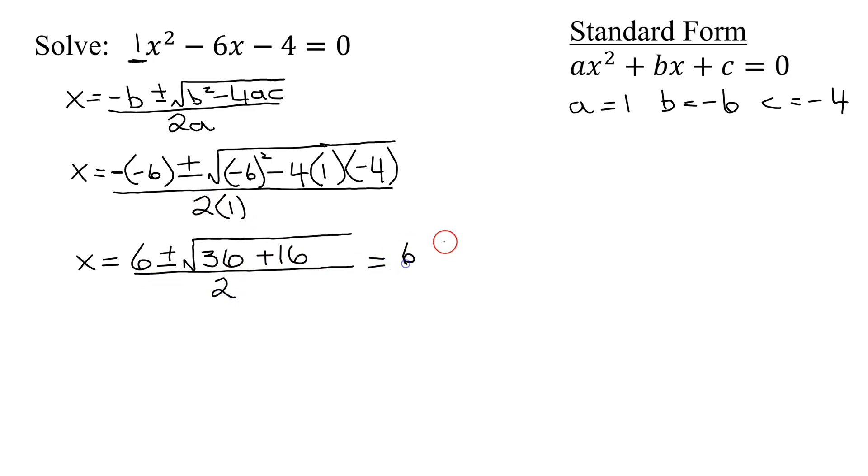So I'm going to get 6 plus or minus the square root of 36 plus 16 is 52. All divided by 2. So we need to simplify the square root of 52. So let's factor 52. Let's see. It's even. So 2 divides into 52 26 times. And 26 is even. So it's 2 times 13. 13 is prime.